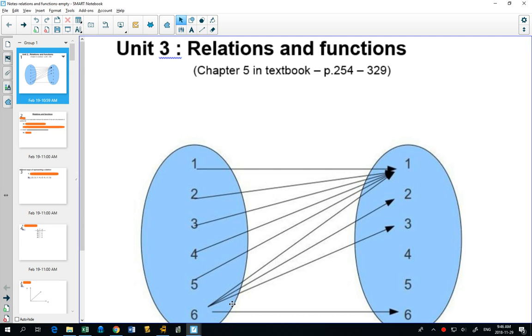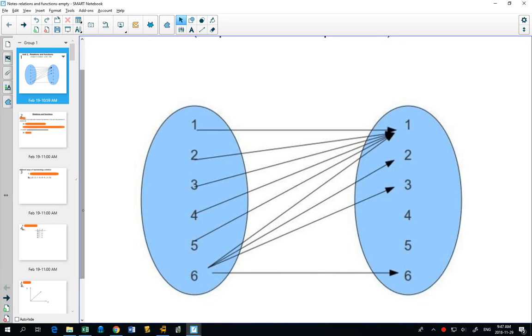The first part of this arrow diagram could be x values, the second part could be y values, and you could graph the point 1,1. You also have 2,1, 3,1, 4,1, 5,1, and you have 6,1, 6,2, 6,3, and 6,6. There's a relationship between the x and the y, and it's shown with an arrow diagram.